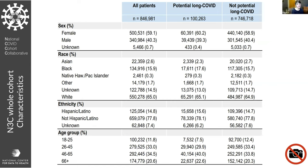Once we trained the model, we ran it on everyone in N3C who met our loose baseline criteria — they had COVID and were at least 90 days out from the acute period. We used this as almost a toy example as part of the Recover Initiative to determine how many potential long COVID patients we may have in our dataset. On 846,981 patients, our model with a 45% threshold for predicted probability ends up labeling about 100,000 as potential long COVID.